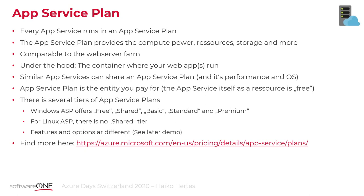Under the hood it is a container, technically speaking. The good thing is you don't need a separate App Service Plan for every single web app - web apps can share it depending on what SKU you've chosen. The tier gives you a maximum number of apps that can run inside the same App Service Plan. The important thing is that the App Service Plan is the entity you actually pay for. You don't pay for the web app or the single container - you pay for the App Service Plan. So it makes total sense to mix and match applications that share a similar lifetime or project.